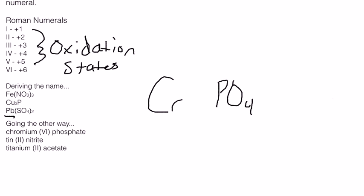So we need to note a few things. Chromium, that VI is representing a plus six oxidation state. So we know that chromium is carrying that plus six oxidation state, which means phosphate has to neutralize it. But we know a single molecule of phosphate oxidizes at 3-. And so what we would do here is we would put it in parentheses and add a subscript of two there to make a total net charge on two phosphate molecules as six minus.